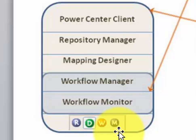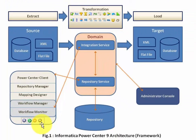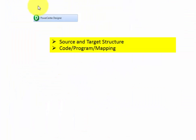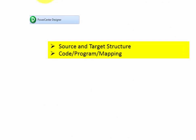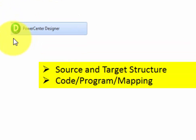Those are: Designer, Workflow Manager, Workflow Monitor, and Repository Manager. This is the Designer logo — D stands for Designer. We create source and target structure in Designer. We also create code for ETL operations in Designer. In Informatica terminology, we call this code or program a mapping. So writing ETL code means creating a mapping in Designer.